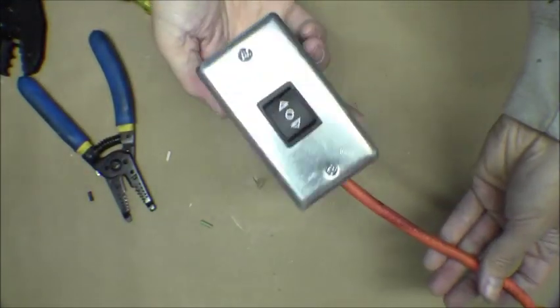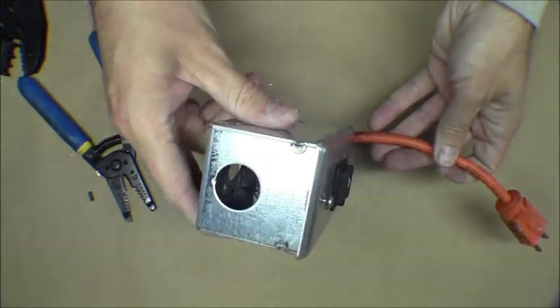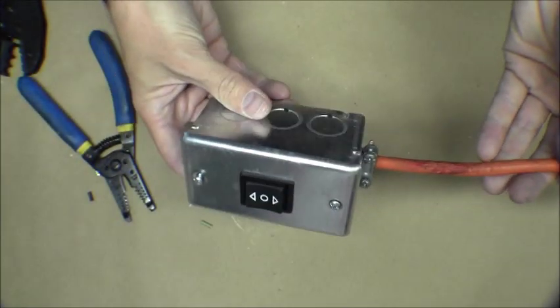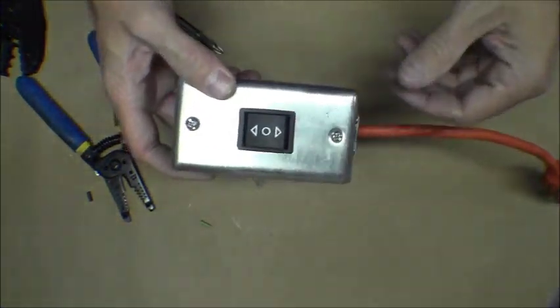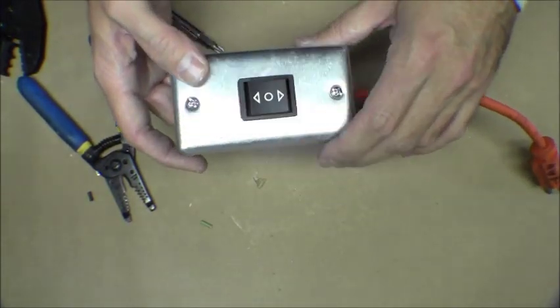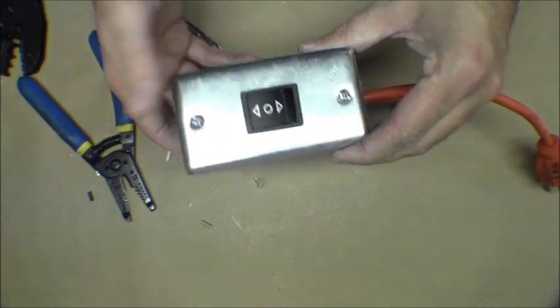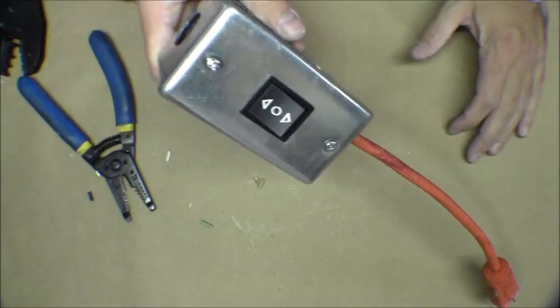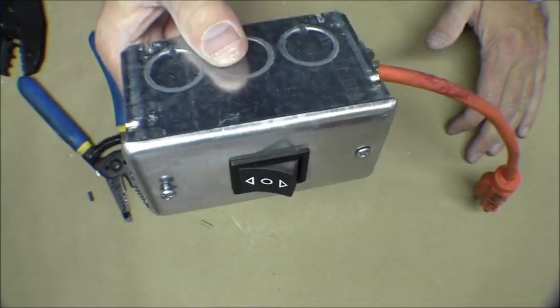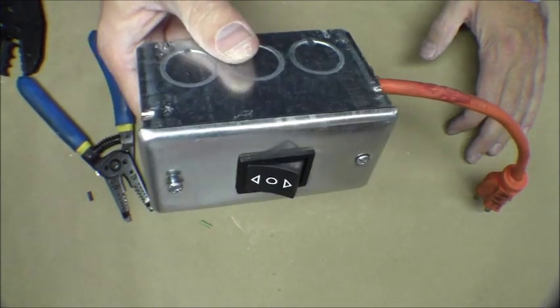And then that one will be ready to go, mounted right on the side of it. Center position off, and you can put some labels on here if you want so that way you kind of know what it's for. Basically a normal position will always be in one position, power coming from your circuit breaker.